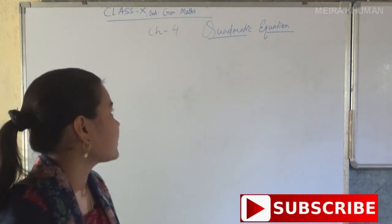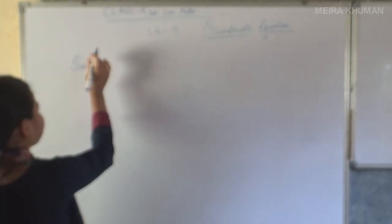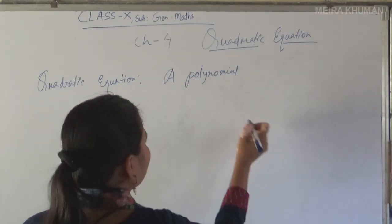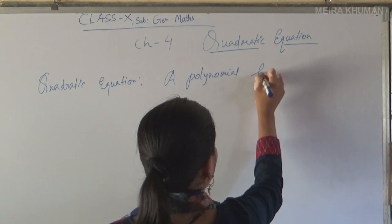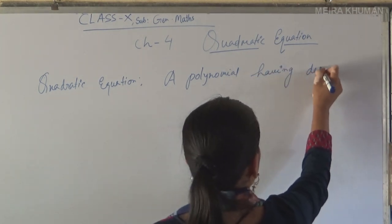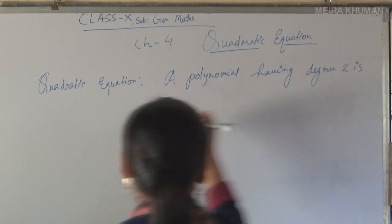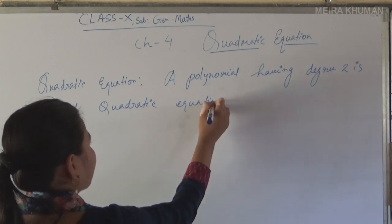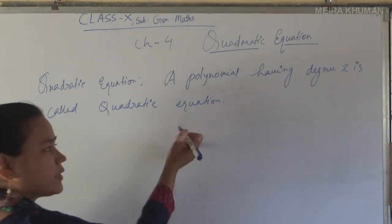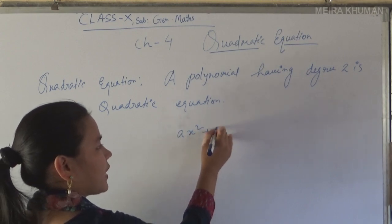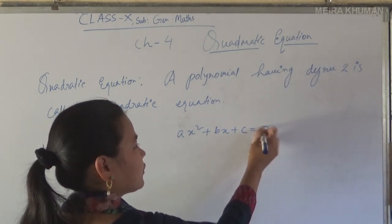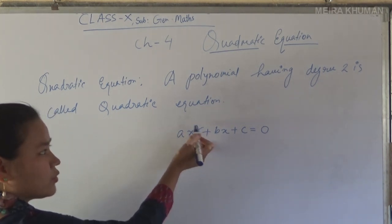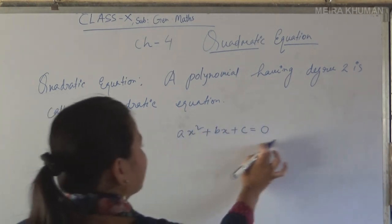What is a quadratic equation? A polynomial of degree 2 is called a quadratic equation. The general form of a quadratic equation is ax² + bx + c = 0, where the degree of the variable x is 2. That is why it is called a quadratic equation.